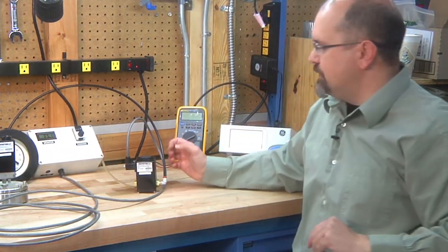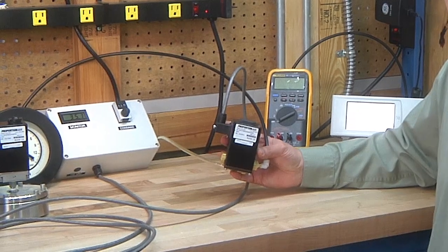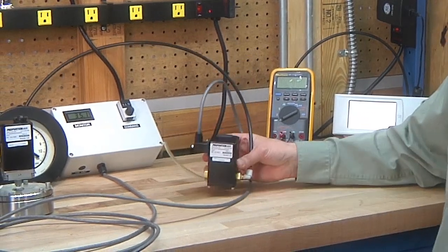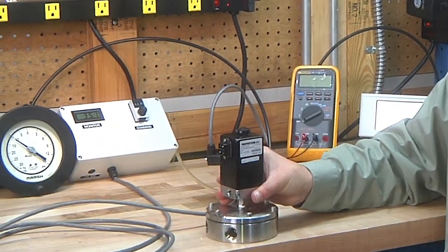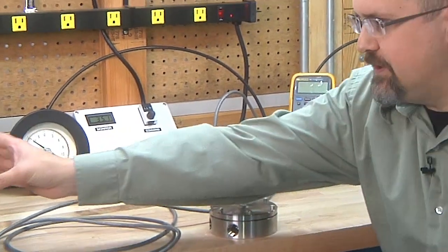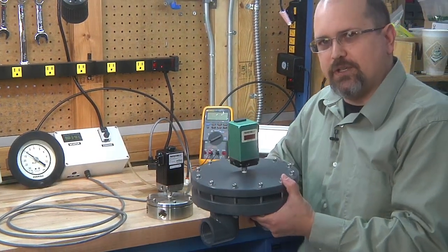Equilibar offers electronic vacuum regulators from small low flow, high resolution, and high accuracy models like this, all the way through all stainless steel wetted parts models for high temperatures or chemical compatibility conditions, and very high flow models all the way up to 4 inch NPT.